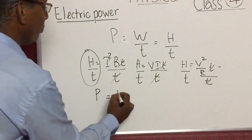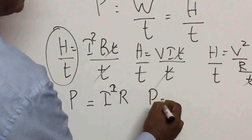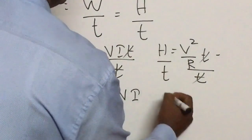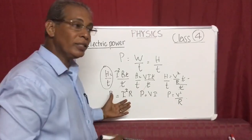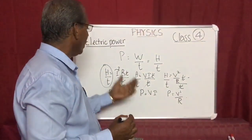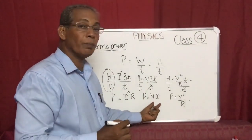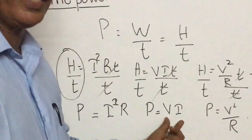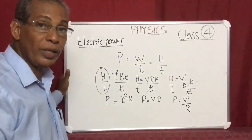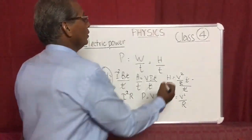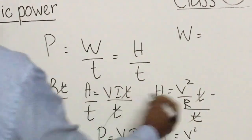So P = I²R, P = VI, and P = V²/R. All these three expressions give you the power. Generally we consider power as P = VI.